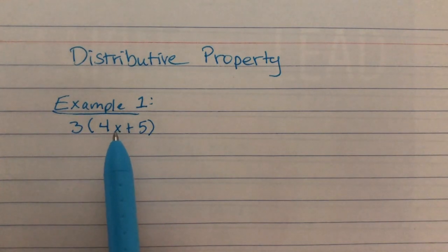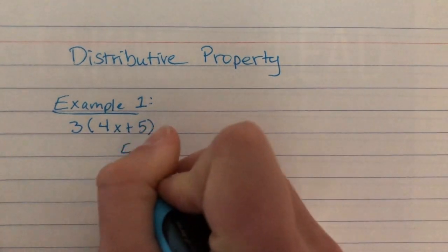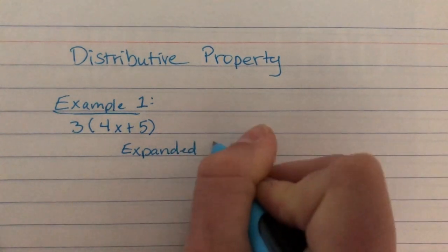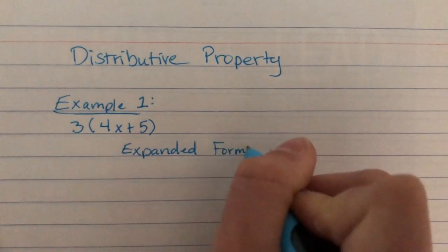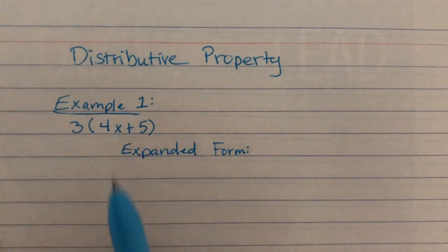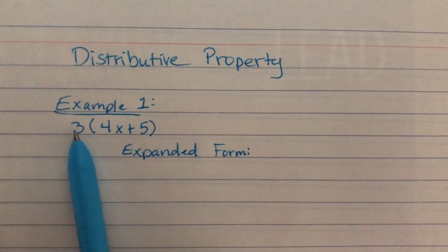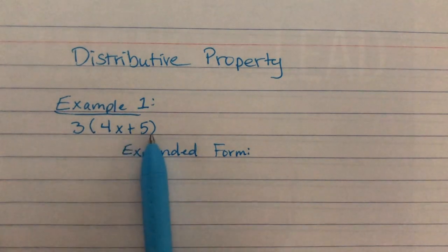We're going to start by writing this in expanded form. Expanded form just means that we're going to write out what this actually is saying. So, this is saying 3 times 4x plus 5.